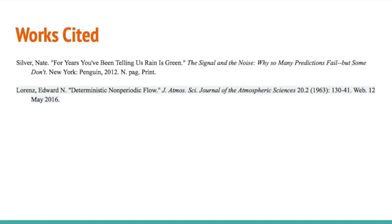For more information on deterministic non-periodic flow and the origins of chaos theory, I highly recommend that you actually read Lorenz's paper. It's very accessible and well written, even though it's dense and kind of technical, it's still pretty easy to follow. Also, for forecasting in general, Nate Silver's book The Signal and the Noise has some really interesting stuff specifically about weather that's worth checking out.